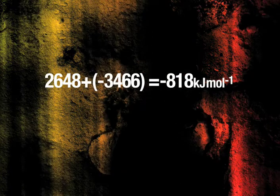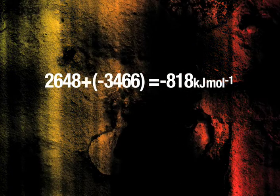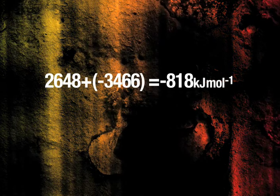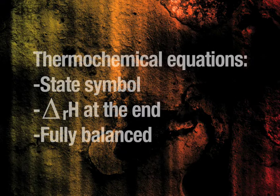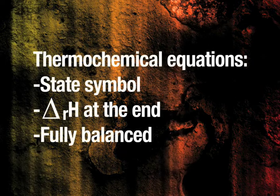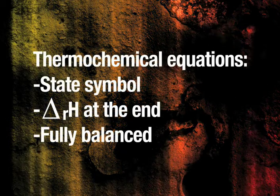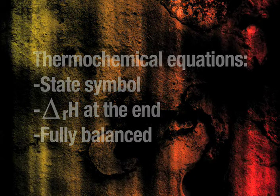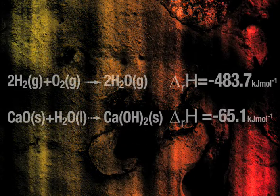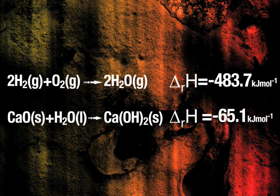In class you will have been given a table to work out enthalpy changes of combustion. A good way of doing this is to use Excel. Thermochemical equations must have state symbols, the enthalpy change of reaction at the end, and must be fully balanced. As you can see, these two examples are both thermochemical equations.